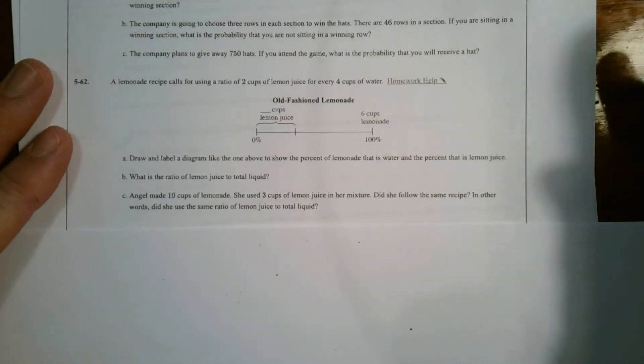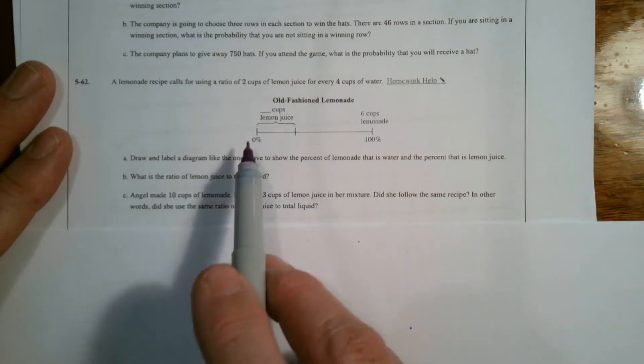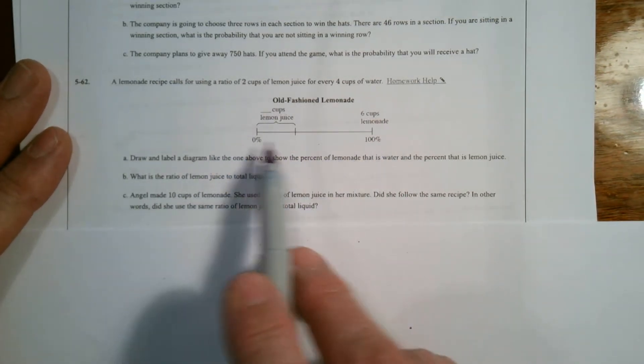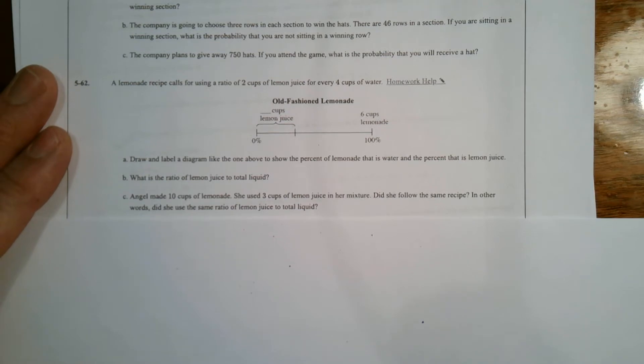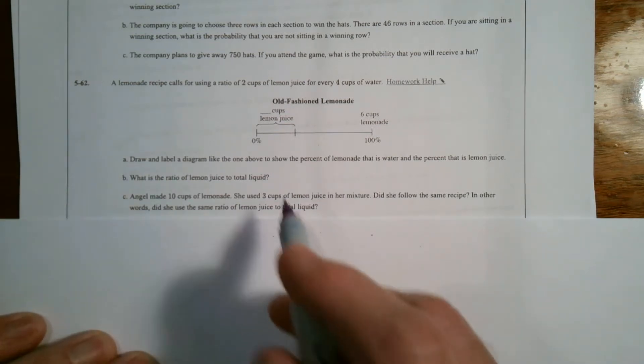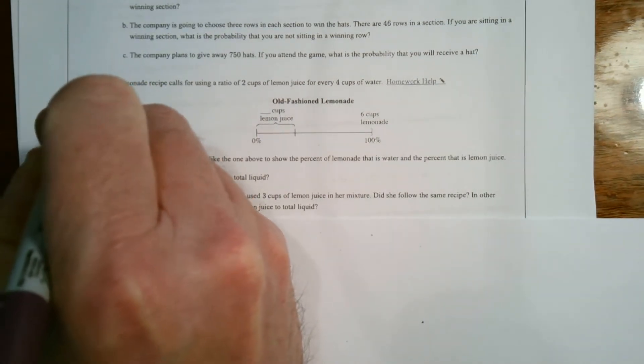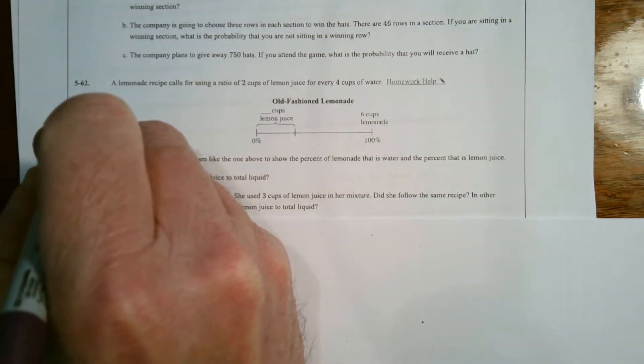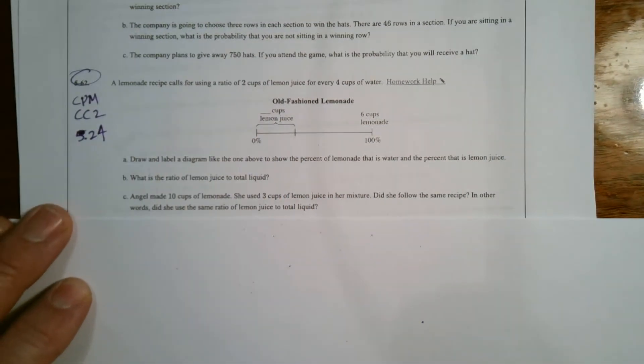Hey folks, Mr. Dell here. We are looking at a percent number line, being able to use this type of diagram, a percentage diagram number line, in order to determine ratios, missing pieces of a ratio, and then actually using the ratio to see if there's equivalency in another situation. So it's ratios and percentages. That's our topic today. This is CPM Course 2, Section 5.2.4, and it's specifically number 5-62.